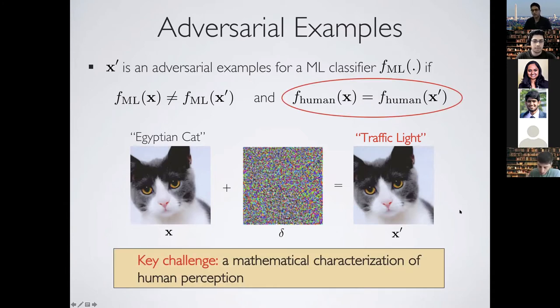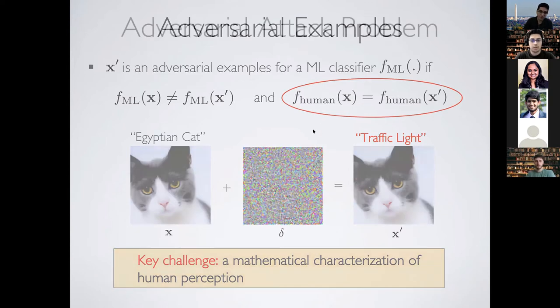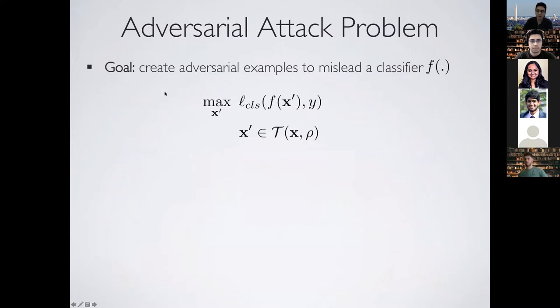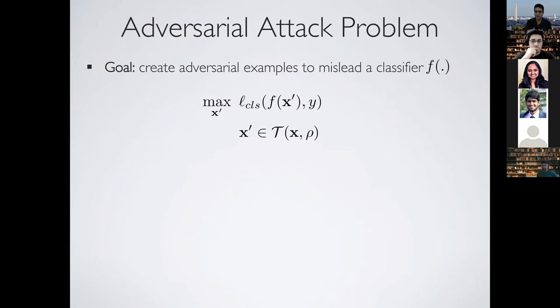One key challenge in adversarial robustness is that we don't have a good mathematical characterization of human perception, which is important even in the definition of adversarial examples. To get around this in adversarial attacks, the goal is to create adversarial examples to mislead the classifier — we maximize a classification loss given that x-prime is within a particular threat model, and that's how we ensure humans would classify x and x-prime the same way.